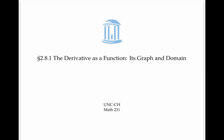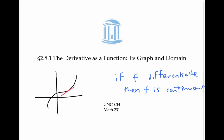In this video, we related the graph of a function to the graph of its derivative by thinking about the slopes of tangent lines. We also looked at several ways that a derivative can fail to exist at a point, and noted that if a function is differentiable, it has to be continuous.